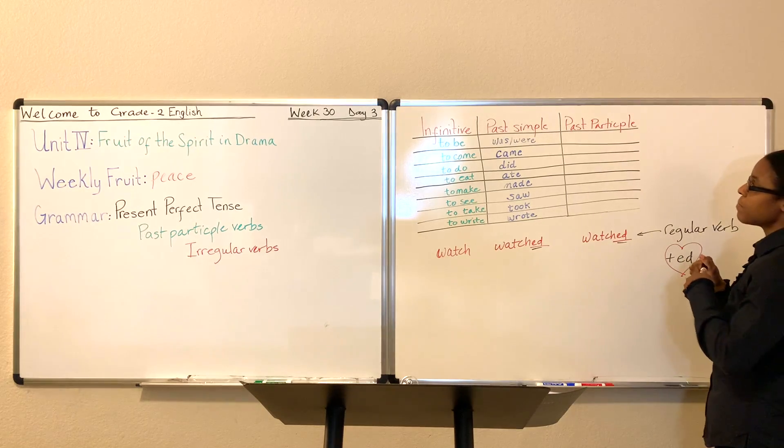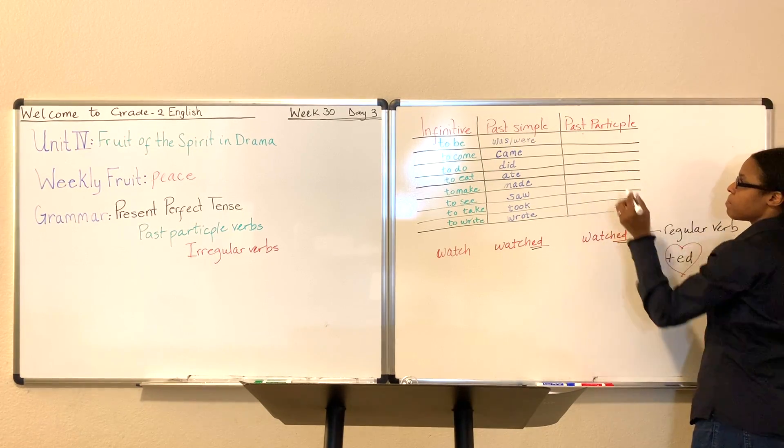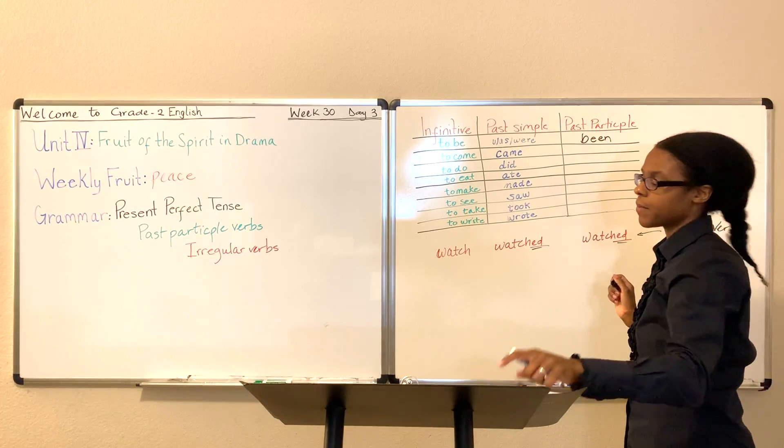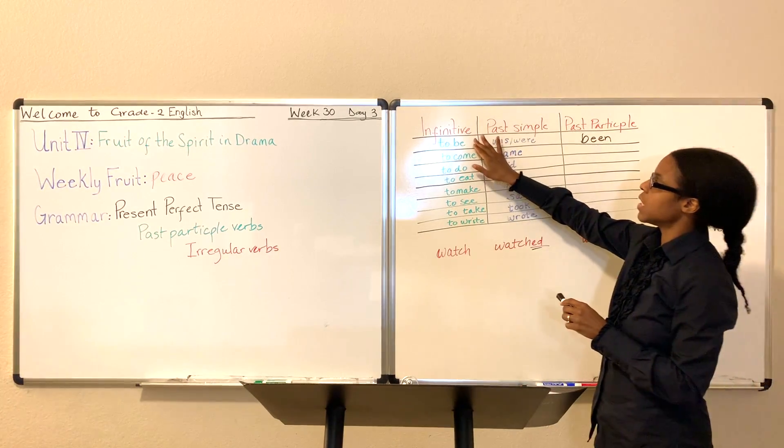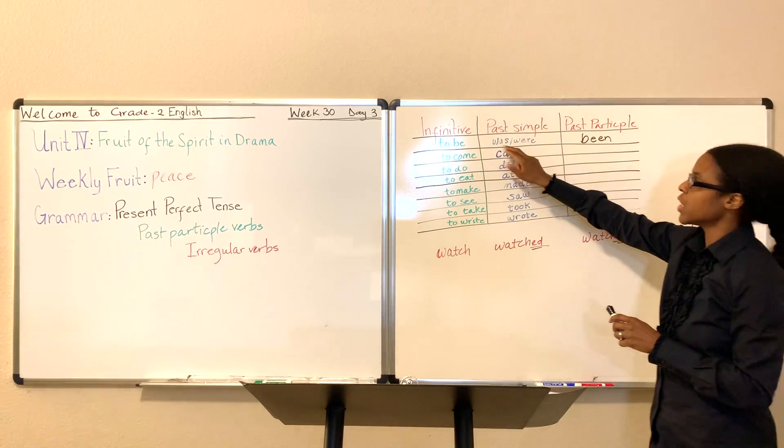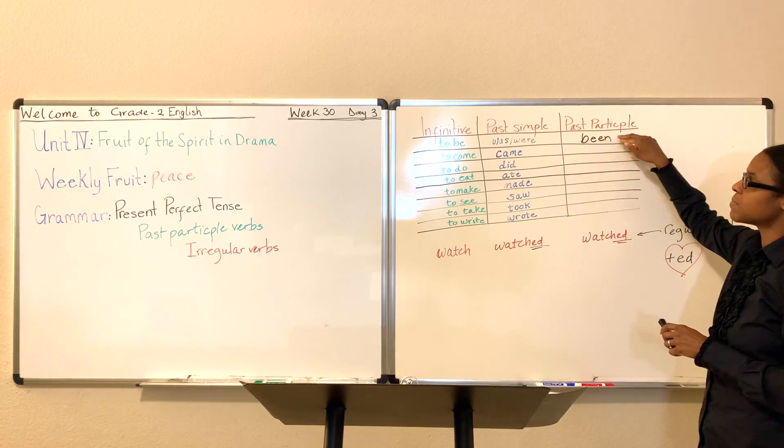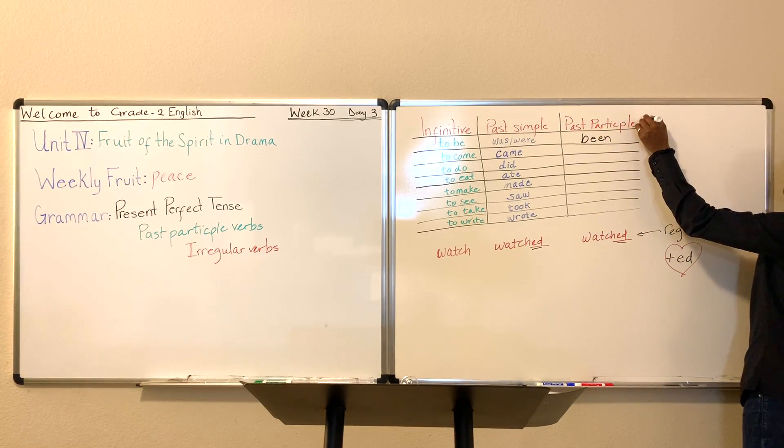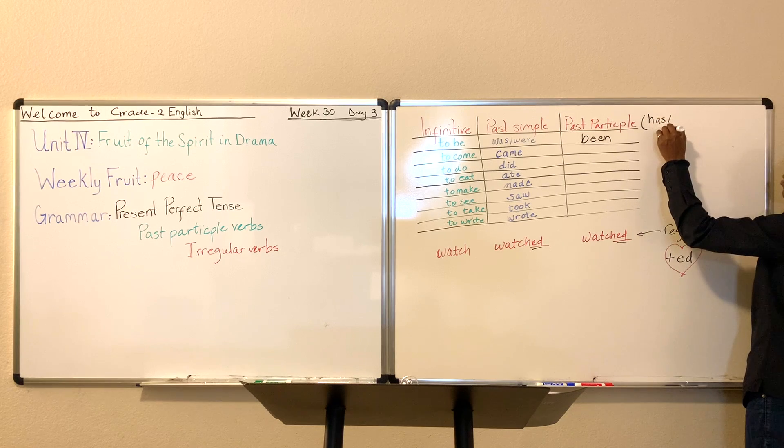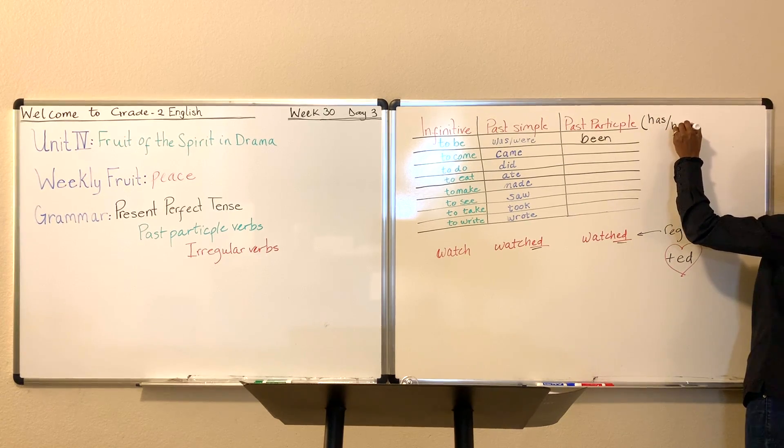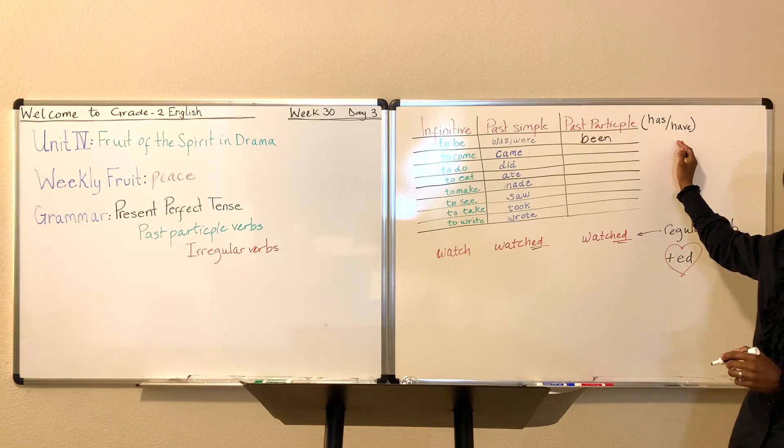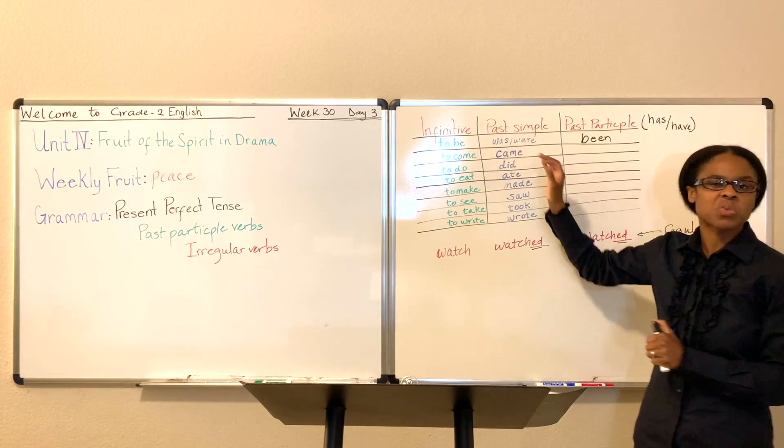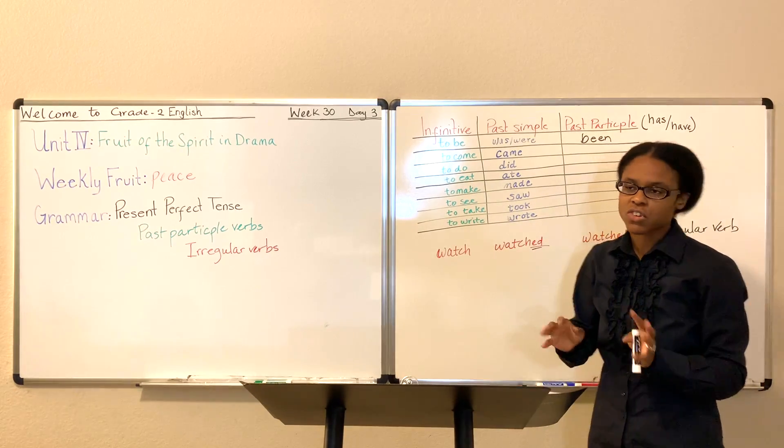So, with that being said, we're going to add the word been. She has been happy. She is. She was. She has been. Remember, with past participle, you have two auxiliary verbs you have to choose from. You have to choose either has or have. Whether you choose has or have just depends on if the subject is singular or plural. The same way if you choose was or were. It just depends on if the subject is plural. So, keep that in mind.